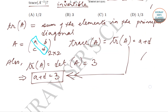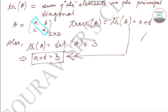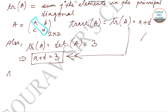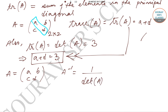Now, we already know A = [a, b; c, d]. Therefore, A inverse is given by (1 / det(A)) times the matrix [d, -b; -c, a]. Try to remember this structural formation as it will be of much help.